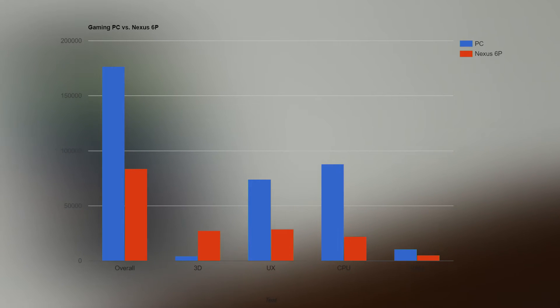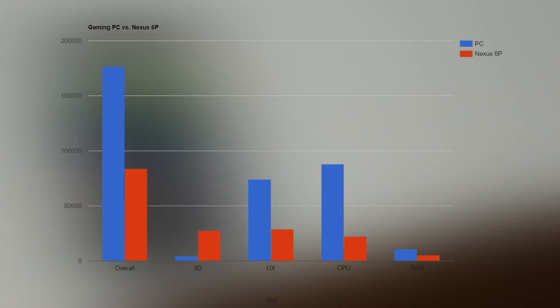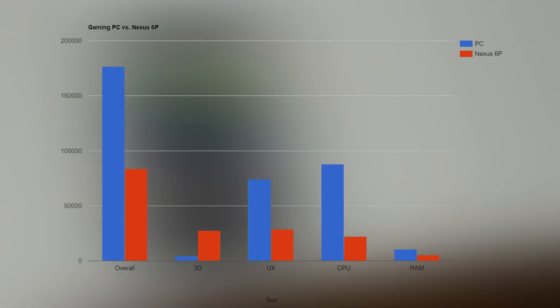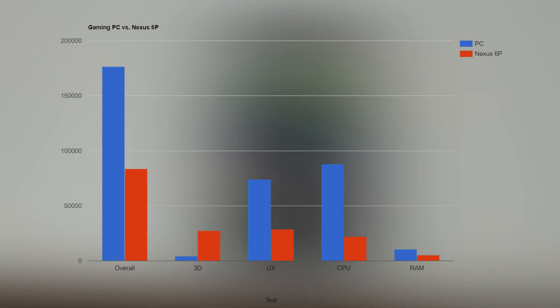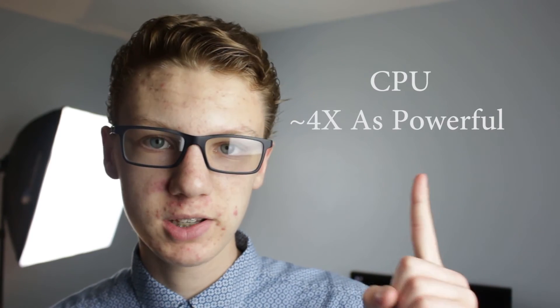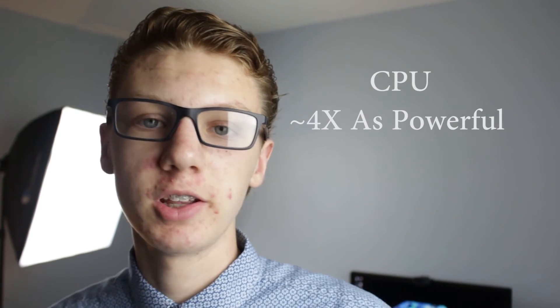As far as CPU goes, the Nexus 6P got a score of 22,265 and the i5-4690K got a score of 87,810. That is a massive improvement — I'll put up right here how many times more powerful that is. So if you want to do something that's CPU intensive, desktop is the way to go, obviously.